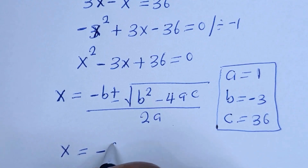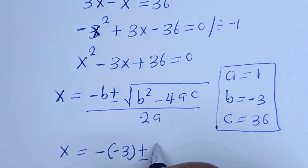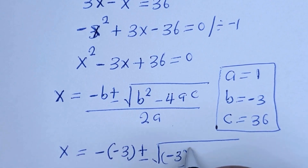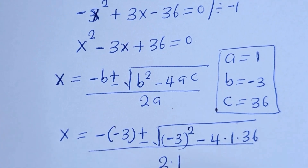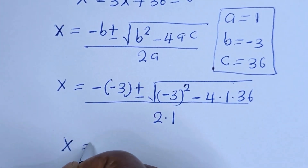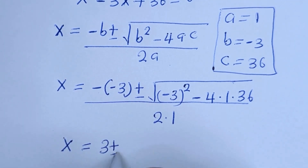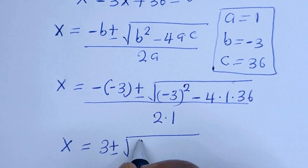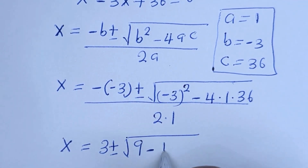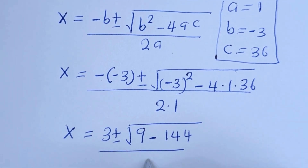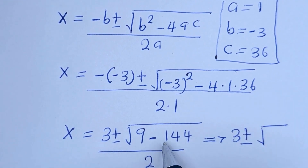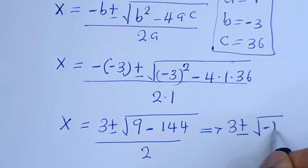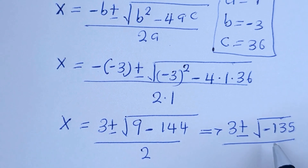S is equal to negative (negative 3) plus or minus the square root of (negative 3) squared minus 4 multiplied by 1 multiplied by 36, all over 2 multiplied by 1. This gives us 3 plus or minus the square root of 9 minus 144 over 2, which is 3 plus or minus the square root of negative 135 over 2.